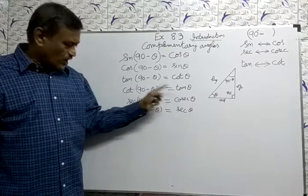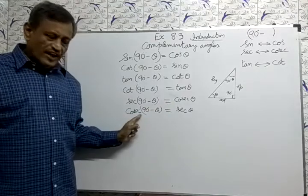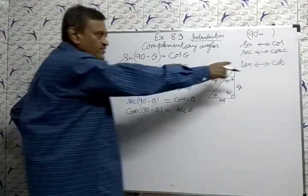Sec(90-θ) equal to Cosecθ, Cosec(90-θ) equal to Secθ. It is in the simple way.